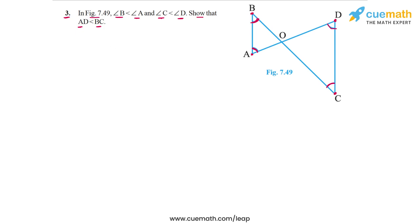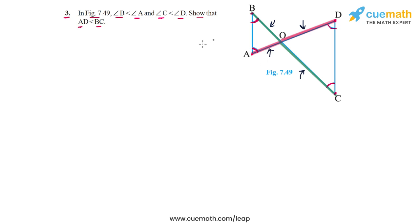I will first outline the logic we will use. Because angle B is less than angle A, the side opposite angle B, which is AO, must be less than the side opposite angle A, which is BO. Similarly, because angle C is less than angle D, the side OD must be less than OC. So AO and OD are respectively less than BO and CO, meaning AO plus OD is less than BO plus CO, giving us AD less than BC.